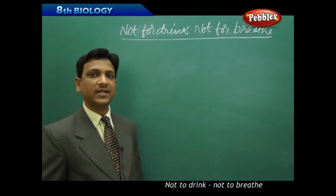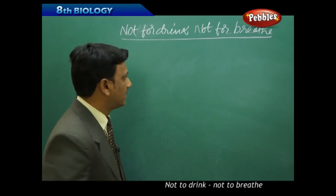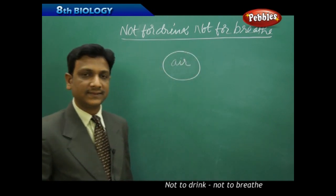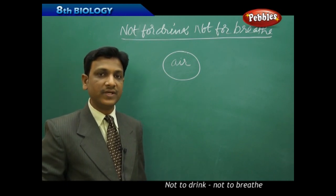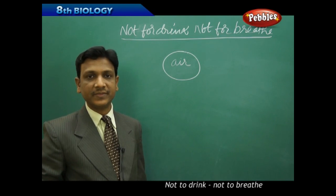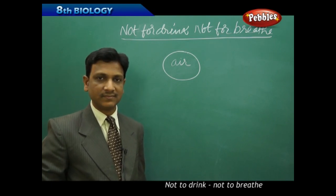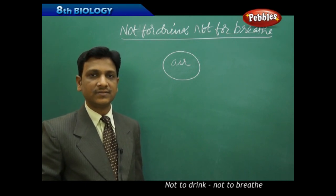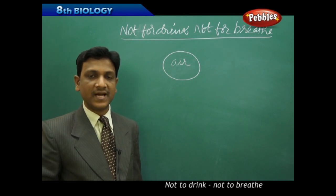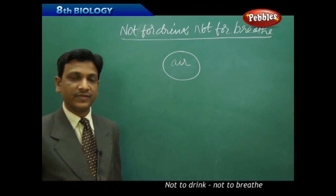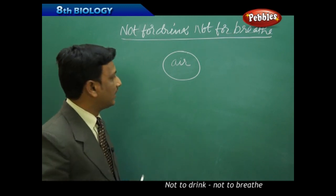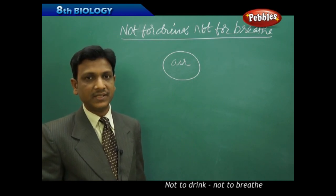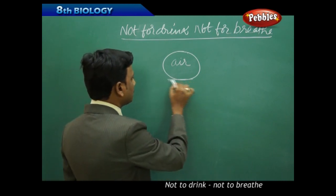We are going to talk about such pollution in this lesson. Air is a very important gas medium present in the atmosphere from which we get our oxygen needs — we breathe oxygen from the air. Air also contains so many other gases which help plants for photosynthesis and other processes. It contains nitrogen which is fixed in the soil for plant growth. Air is a mixture of various important gases, and it is being polluted extensively by human activities.